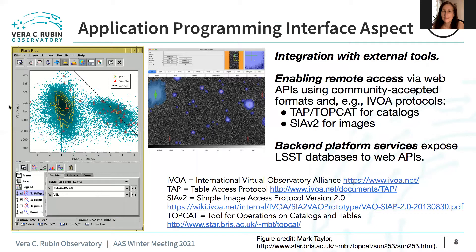The application programming interface, or API aspect, provides remote access to the LSST data that enables integration with external tools. The API aspect will use widely adopted community-accepted formats and protocols such as those defined by the International Virtual Observatory Alliance. Some users might be familiar with, for example, the table access or simple image access protocols, or TopCat, the tool for operations on catalogs and tables. The RSP also includes cross-aspect functionality — for example, the portal aspect's catalog browser and the notebook aspect's data visualization capabilities can be used in tandem.